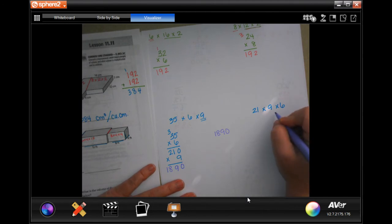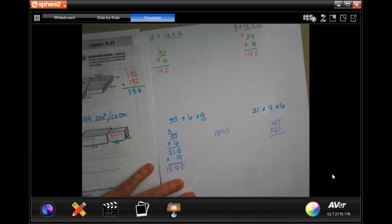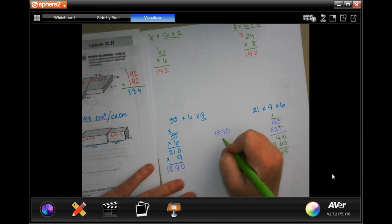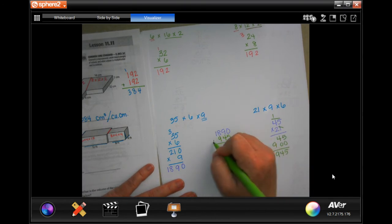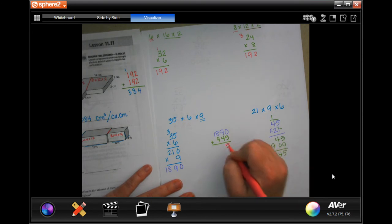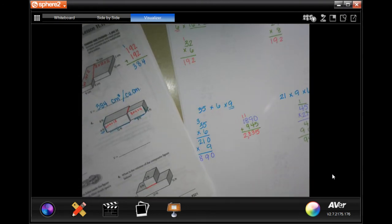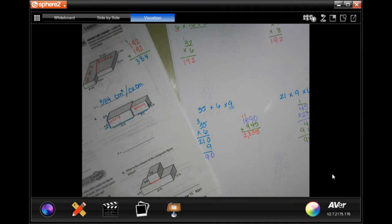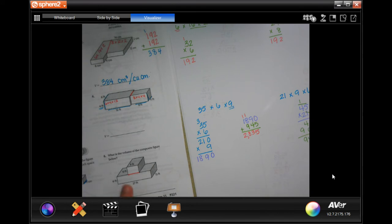9 times 18 is... zero, 9, 18. So there's 1890. Now 21 times 9 times 6, I know that 9 times 6 is 45, so 45 times 21. 2 times 5 is 10, carry the 1. 2 times 4 is 8. 945. Add those two together: 5, 13, 18, 2. 2,835 centimeters cubed.